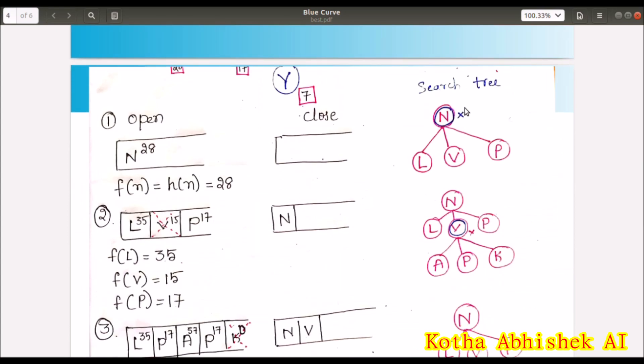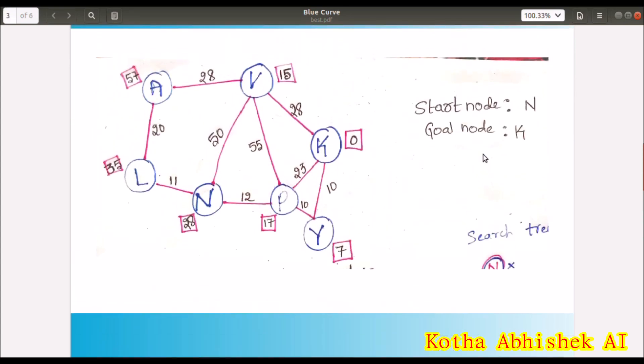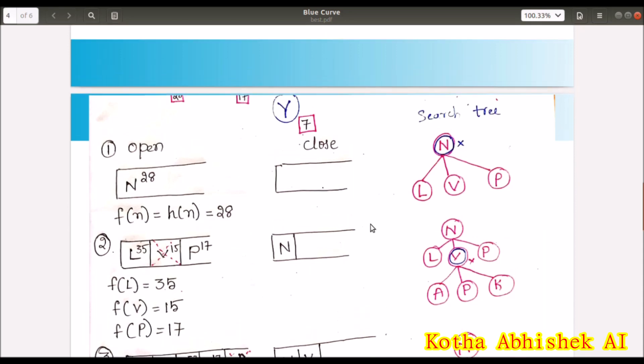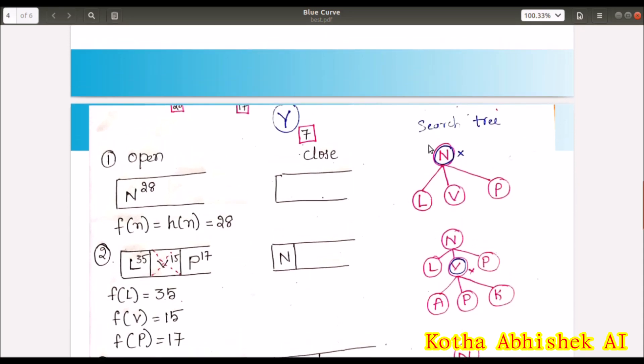N has L, V, P. And heuristics. We have to write heuristics. And first of all, when we do this process, we will see the close has N.